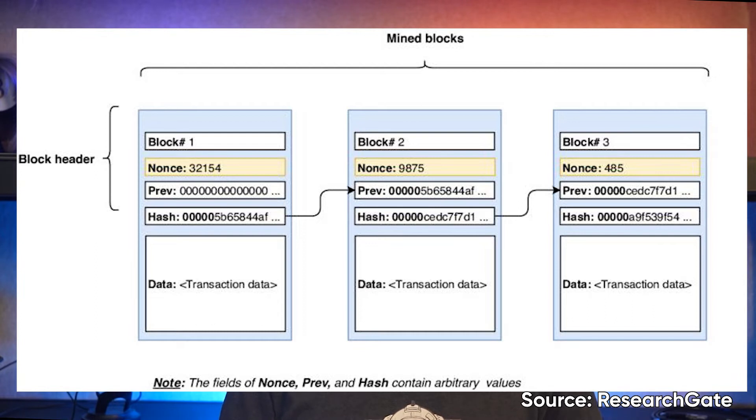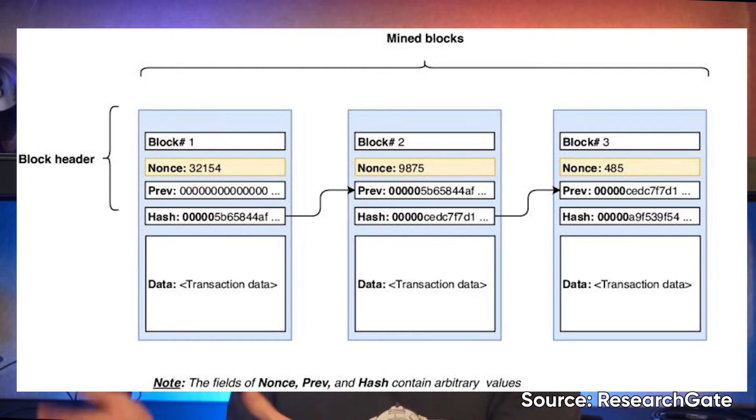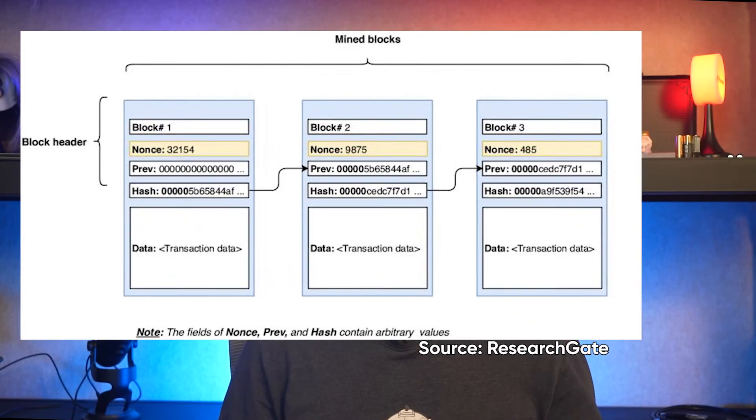If anything in the block is altered, its hash changes. The current block also contains the previous block's hash, which helps prevent tampering. When something does happen to a block, the hash changes. As a result, the following block no longer stores the previous block's hash, making all subsequent blocks invalid. An attacker would have to regenerate the hash of every invalid block. For enhanced security, blockchains also utilize consensus mechanisms to authenticate transactions on a distributed ledger.